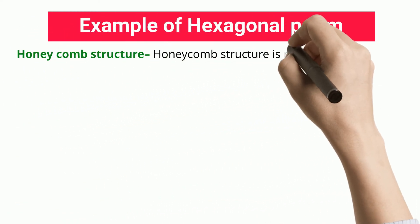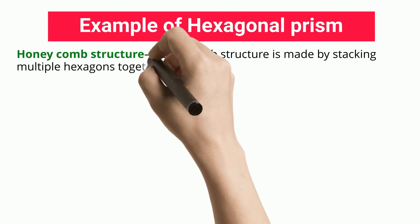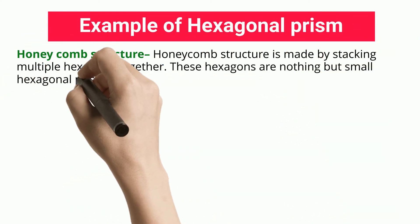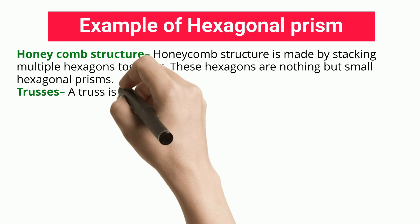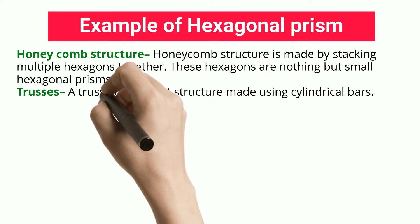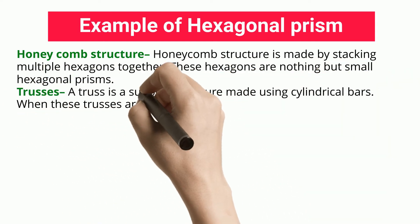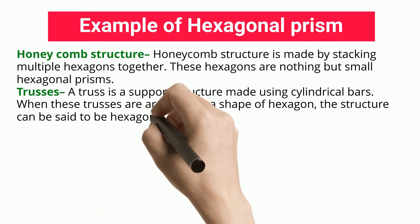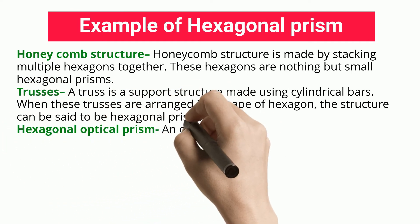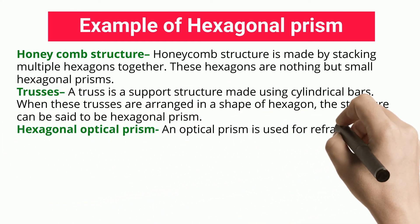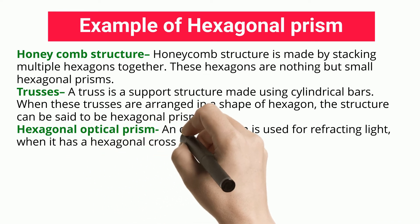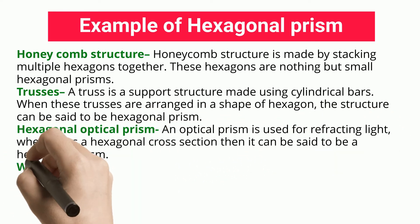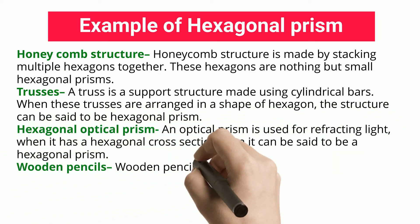Honeycomb structure: a honeycomb structure is made by stacking multiple hexagons together. These hexagons are nothing but small hexagonal prisms. Trusses: a truss is a support structure made using cylindrical bars. When these trusses are arranged in the shape of a hexagon, the structure can be said to be a hexagonal prism.